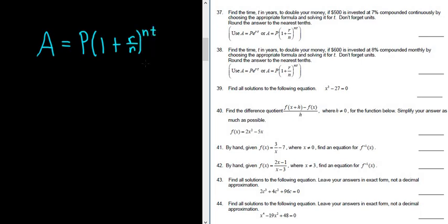So the only time it's the other formula, the PERT formula, is if it says continuously. Like on number 37, it says continuously, and that's how you would know it's the PERT formula. In this case, it says monthly, so you would use this formula here.